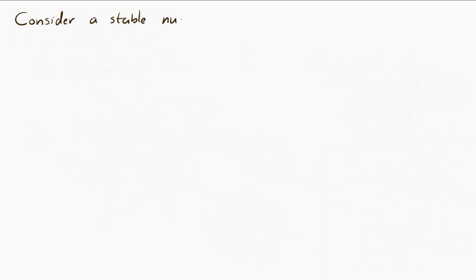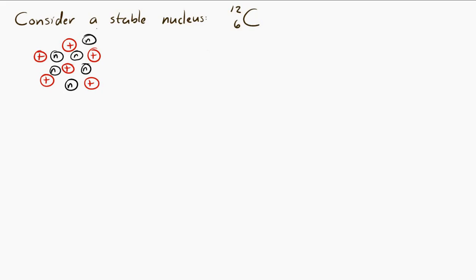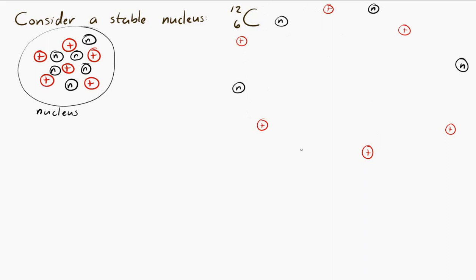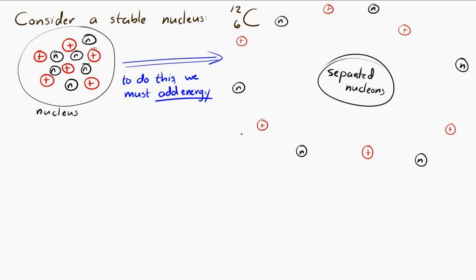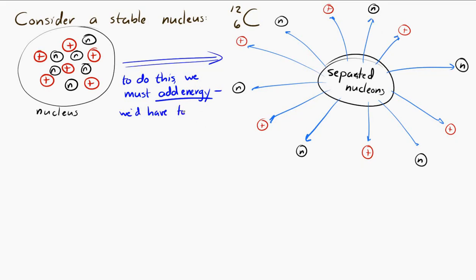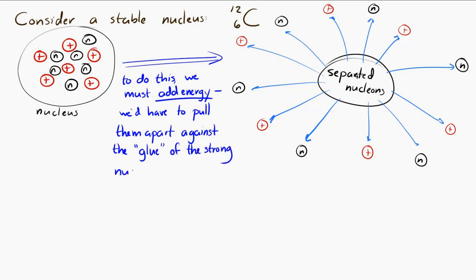Now let's think about a stable carbon-12 nucleus, which has six protons and six neutrons. Imagine the nucleus as a combined set, and then imagine separating all the nucleons. If we take a nucleus and separate all of the nucleons — essentially going in and pulling them apart with tweezers — that would require adding energy to the system. We would have to do work to separate those nucleons because we'd be acting against the strong nuclear force, which is trying to bind all the nucleons together.